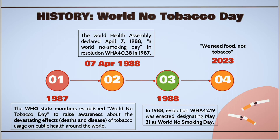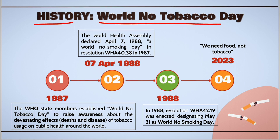Now let's see the history of World No Tobacco Day. In 1987, WHO member states established World No Tobacco Day to raise awareness about the devastating effects of tobacco usage on public health around the world. The World Health Assembly, by passing resolution WHA 40.38 in 1987, declared 7th April as World No Smoking Day, which was first celebrated on 7th April 1988.